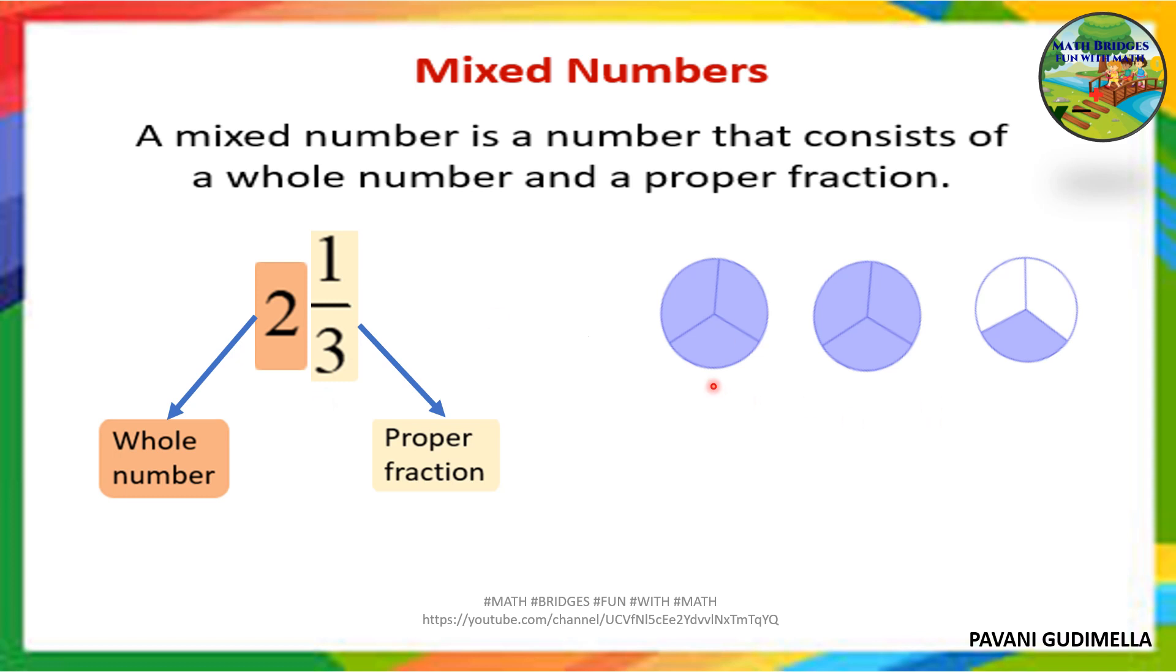So you have to divide each figure into 3 equal parts - 2 wholes. In the first 2 circles you can see everything has been shaded in blue color. Now coming to the third one, only one part is shaded because it is 1/3. So 2 wholes and 1/3 - this is the pictorial representation of a mixed fraction.